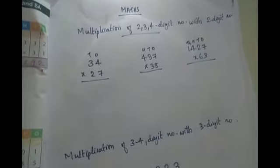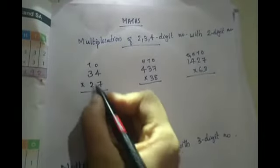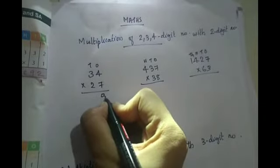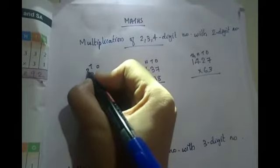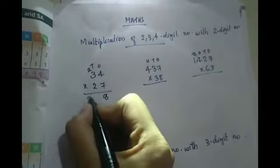We will do some examples. So first one is 7 into 4 is 28, you will write the 8 here, 2 is carried over, 7 into 3 is 21, 21 plus 2 is 23.